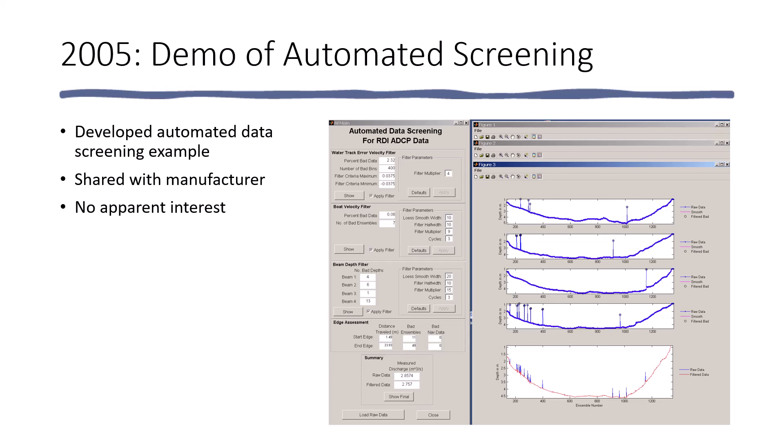Likewise, we often see spikes in our depth data. And again, it would seem logical that we could use a statistical procedure to mark out those invalid depths automatically. So I developed this demonstration project in MATLAB, shared it with the manufacturers. And unfortunately, over time, they apparently didn't have enough interest to implement it into their software.